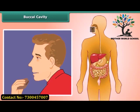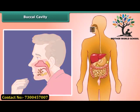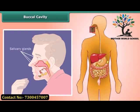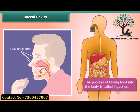Mechanical digestion breaks food into smaller pieces, and saliva in our mouth, produced by salivary glands, causes the breakdown of starches into sugars. This process of taking food into the body is called ingestion.